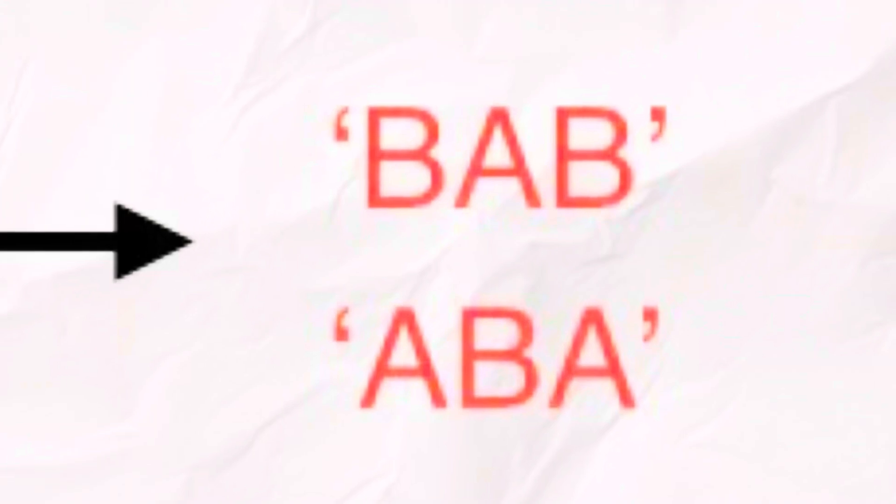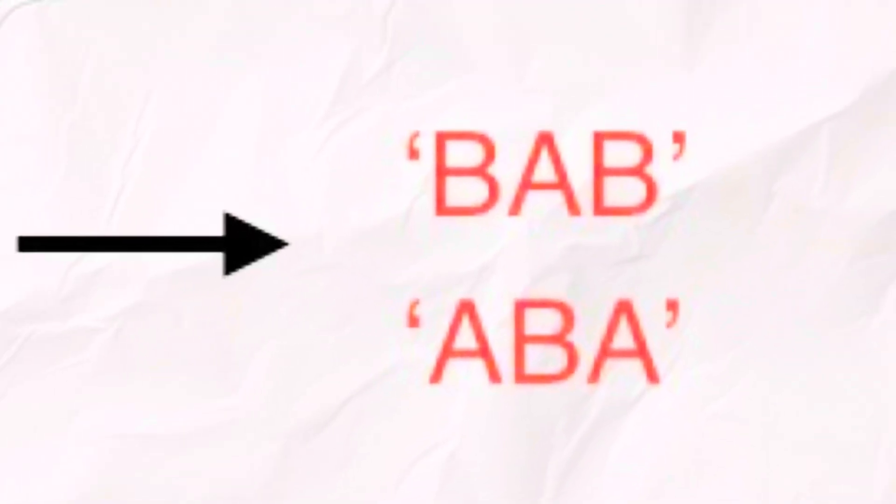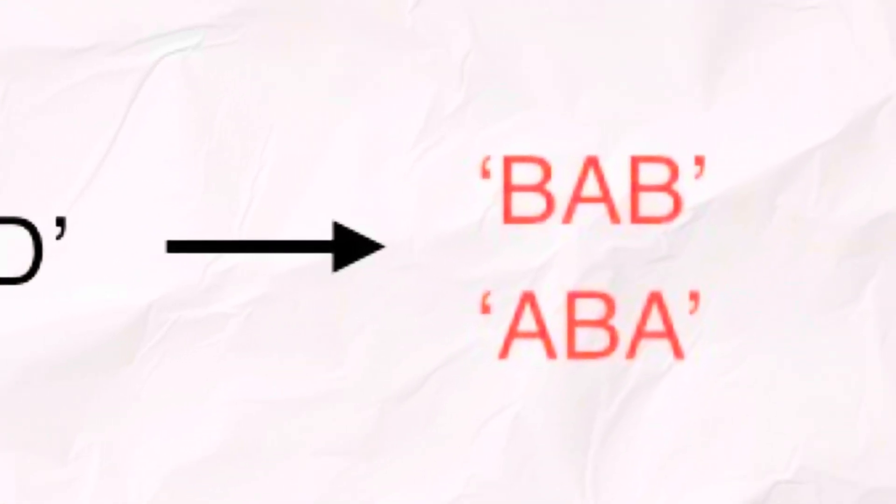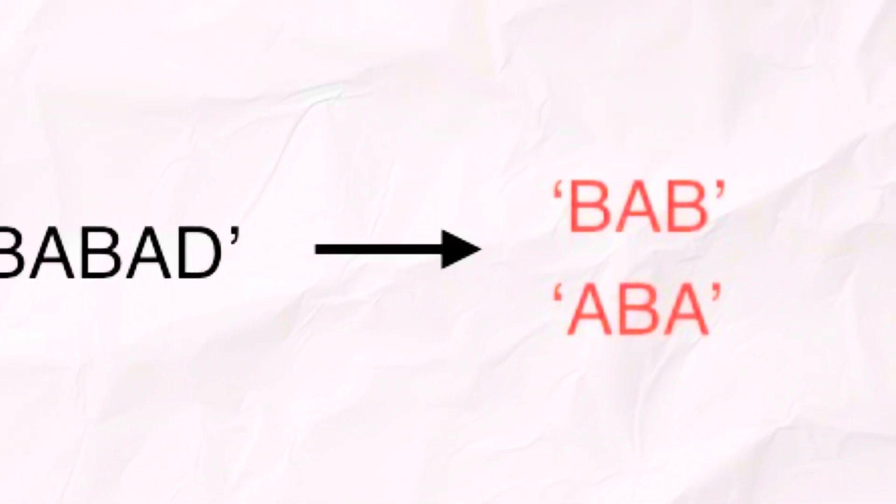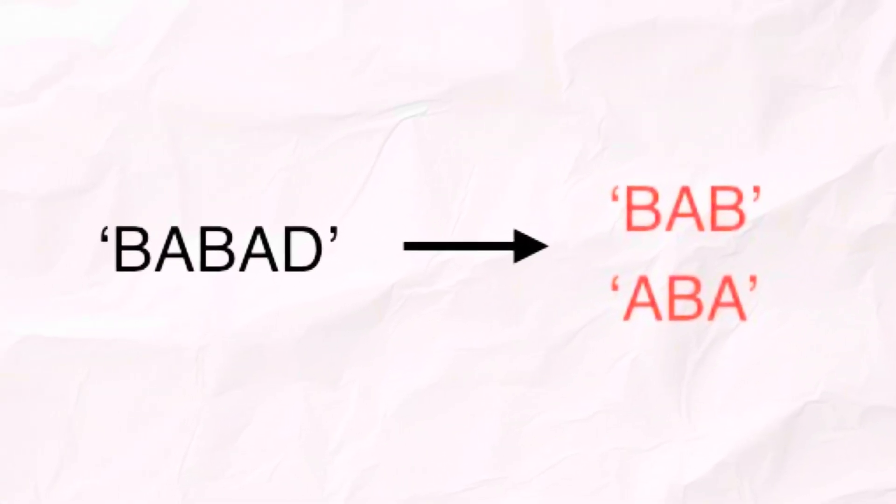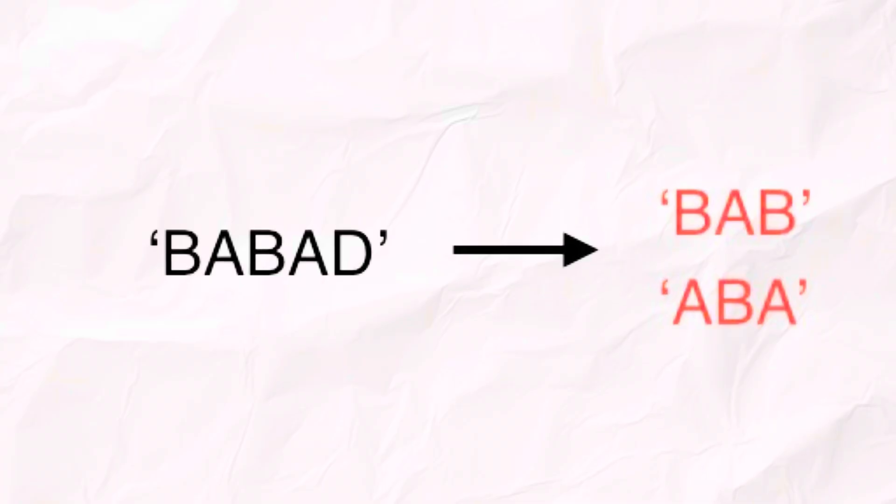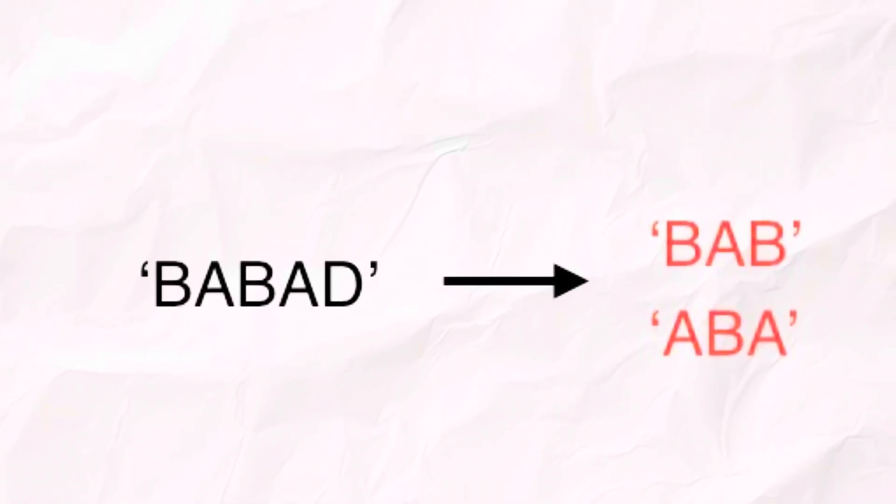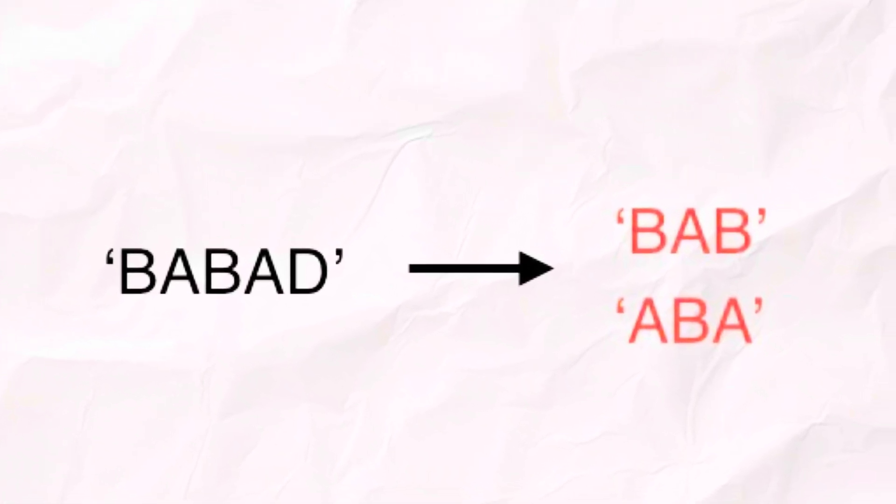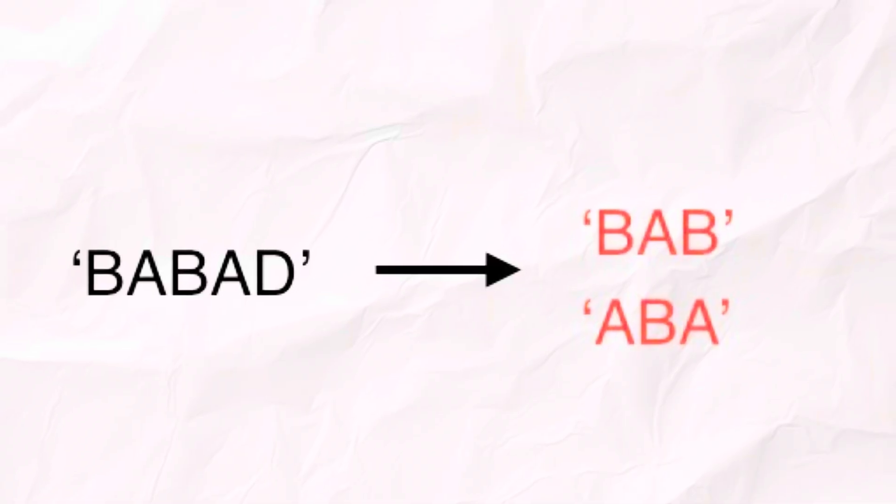But the brute force way would be to check all substrings and see if they are palindromes. That's super slow, of course, n squared time, or even worse. So we need something faster. And here is the role of Manacher's algorithm.